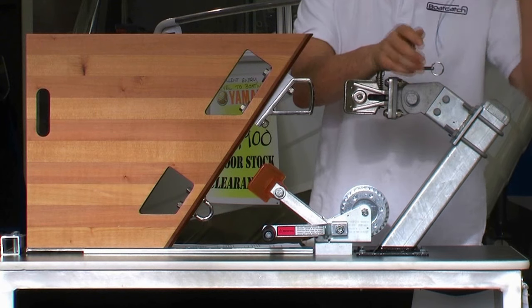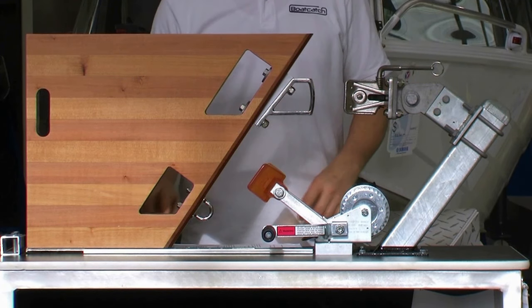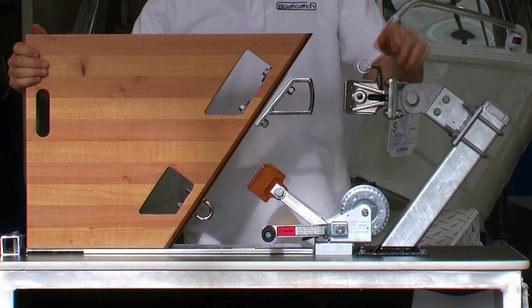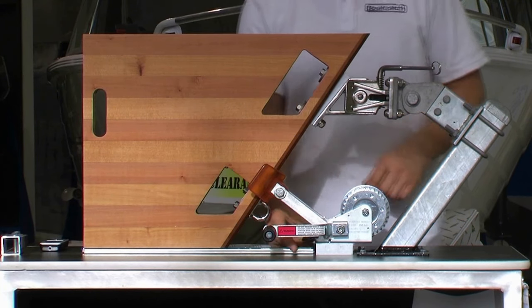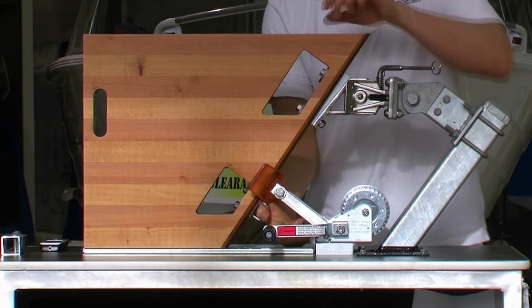What sets Boat Catch apart is the positive lock of this pin through this large eye. When the pin is closed through the eye, there is no way the boat can ever come off accidentally.